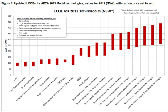In 2004, wind energy cost a fifth of what it did in the 1980s, and some expected that downward trend to continue as larger multi-megawatt turbines were mass-produced. As of 2012, capital costs for wind turbines are substantially lower than 2008–2010 but are still above 2002 levels.